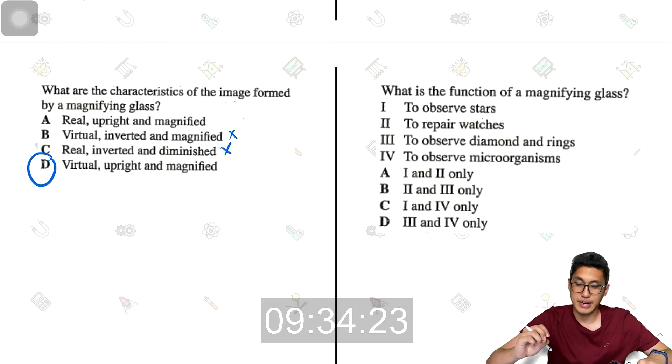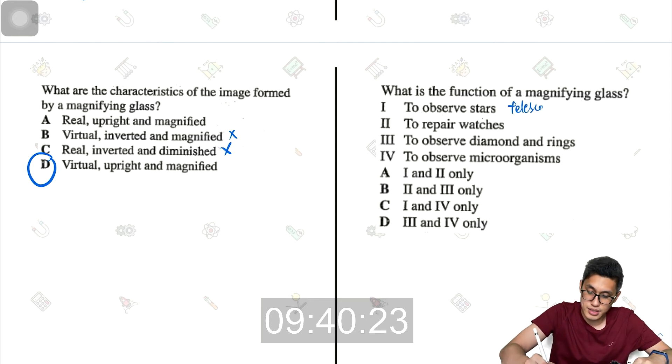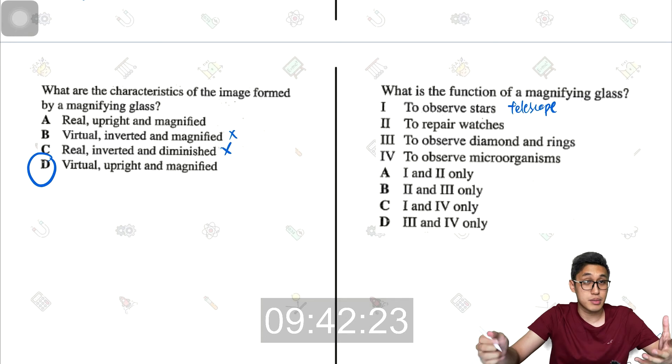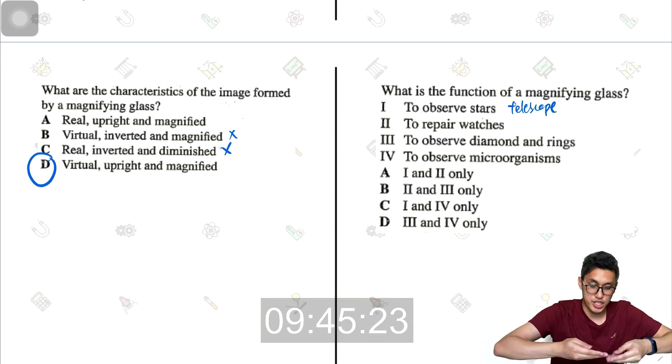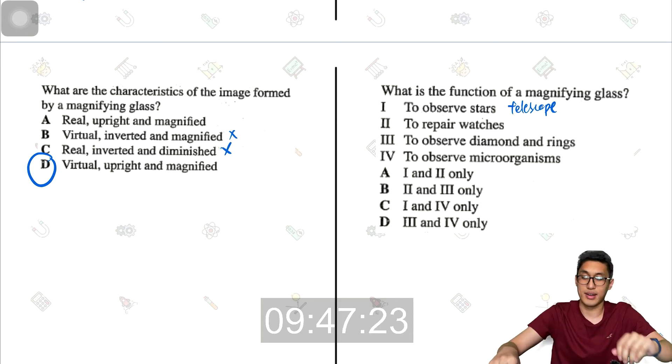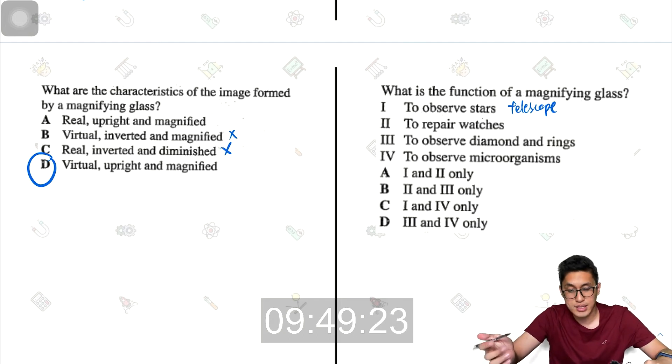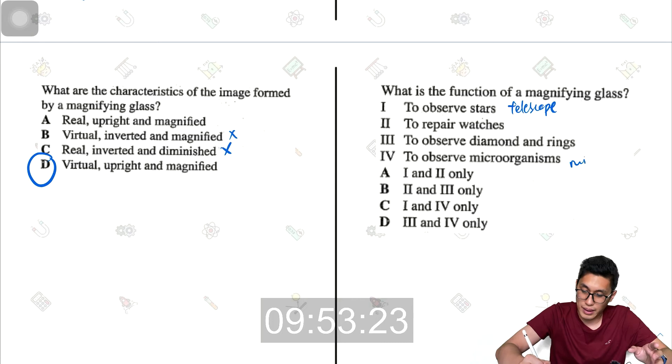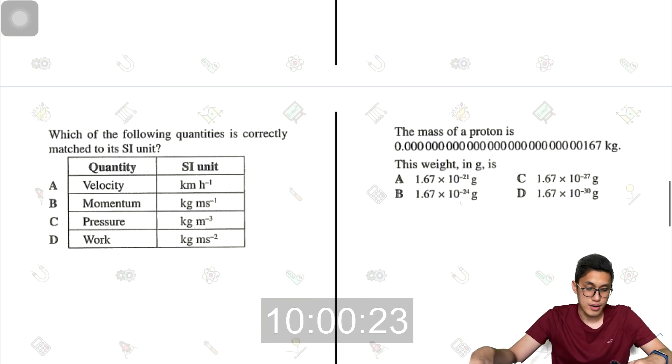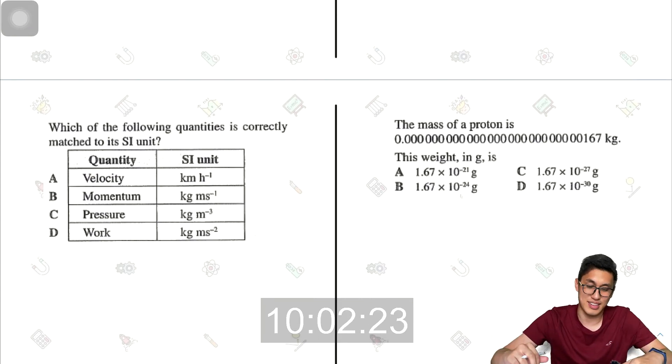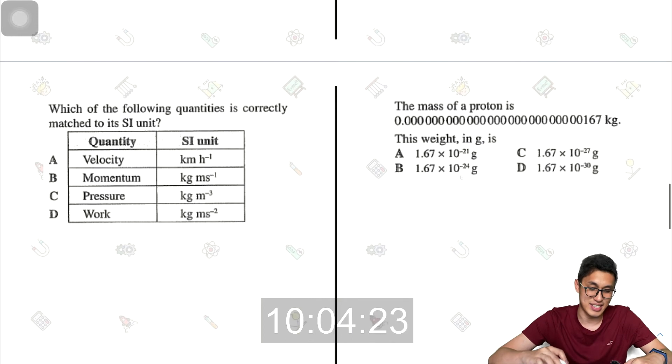What is the function of a magnifying glass? So a magnifying glass, you cannot use it to observe stars because that is what a telescope does. To repair watches, possibly. They have this big magnifying glass, then they put the watch underneath and they work with it. Same for diamonds and rings. And microorganisms, this would be a microscope. So two and three, it will be B.